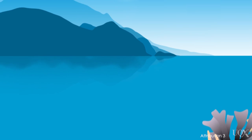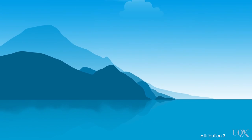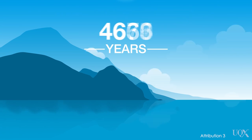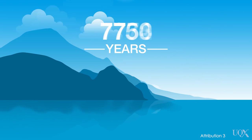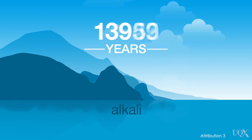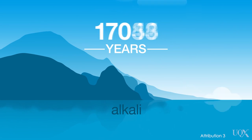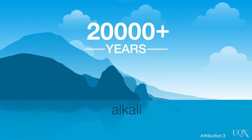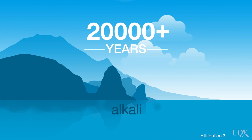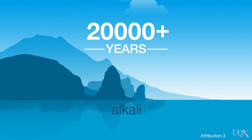Another aspect of ocean acidification is that it takes tens of thousands of years to reverse. The only way the ocean can become less acidic is from the erosion of materials from rocks on land that are washed into the ocean. It's sobering to think that the bad decisions we are making today when it comes to ocean acidification will have consequences for at least the next 300 generations of humans.